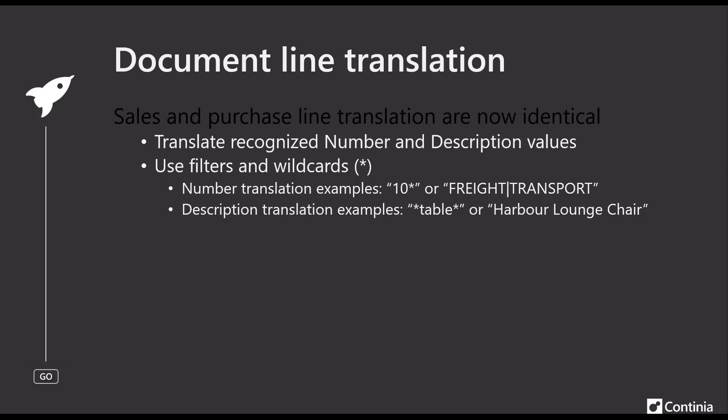An example for the number field: if you want to translate the content in the number field, it could be something that begins with a 10, so it's '10*' (asterisk), or it contains specific values like 'freight' or 'transport'. These translation examples are something you could fill in into the number field translation.